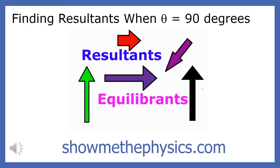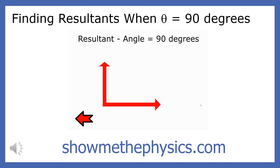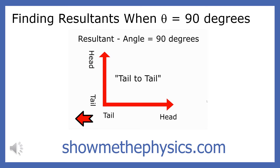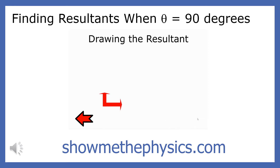When two or more forces act on a body, physicists will combine the vectors to find the single force that will have the same result. This is called the resultant. In my last two presentations I showed you how to find the resultant when the angle between the two forces is 0 degrees and 180 degrees.